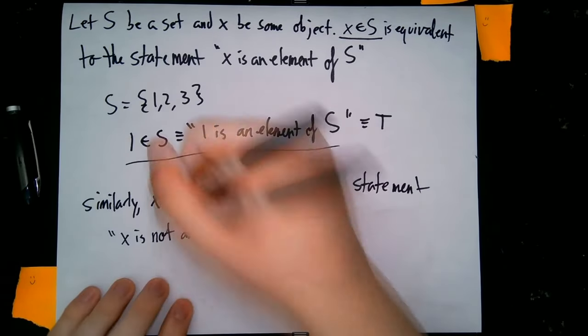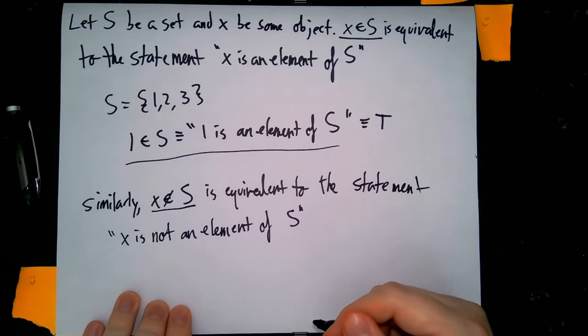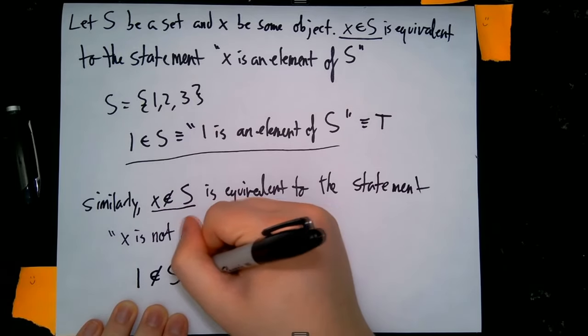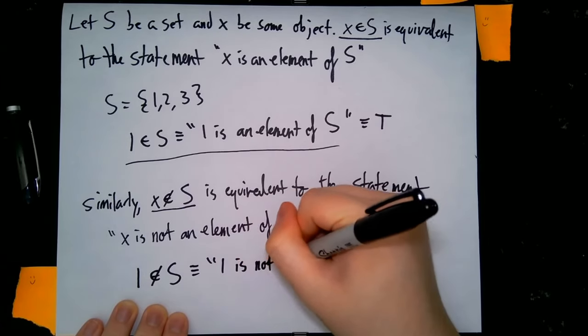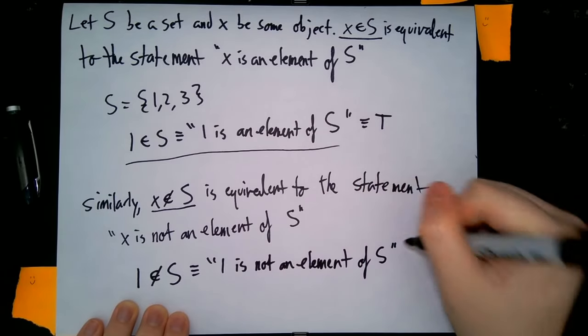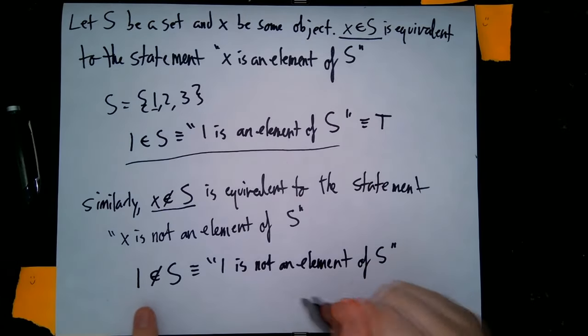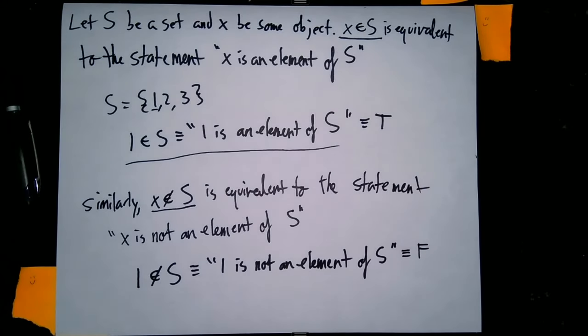Then we have a similar type of statement where we basically write the same sort of curvy E, but we actually cross it out. And we say that this is equivalent to the statement "X is not an element of S." So if "one is not an element of S" is a false statement, we can say that this whole thing is false.